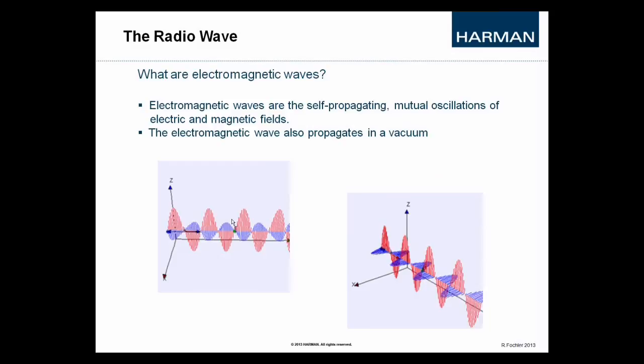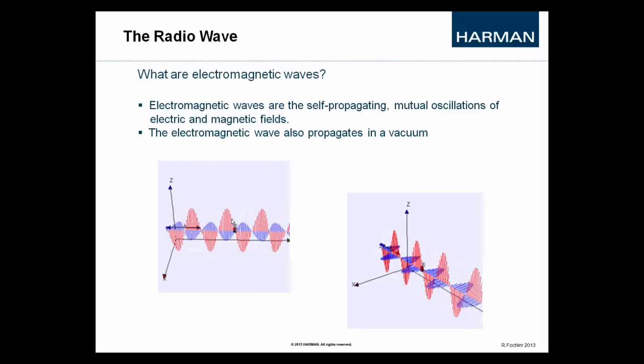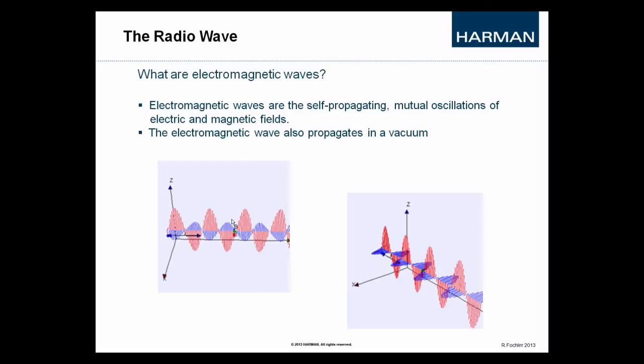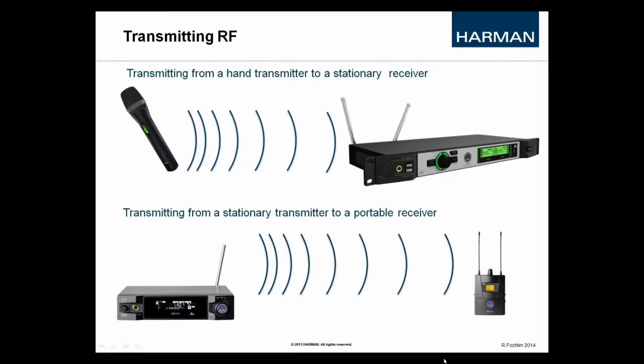If a radio signal is traveling from transmitter to a receiver, it carries the information content that was previously modulated onto such an electromagnetic wave, being now the carrier of that information. That process is taking place in a transmitter from where the wave travels through space until it gets picked up by a receiver where the original information is demodulated and restored. This can be achieved by a portable hand transmitter transmitting to a stationary receiver or vice versa from a stationary transmitter to a portable receiver.